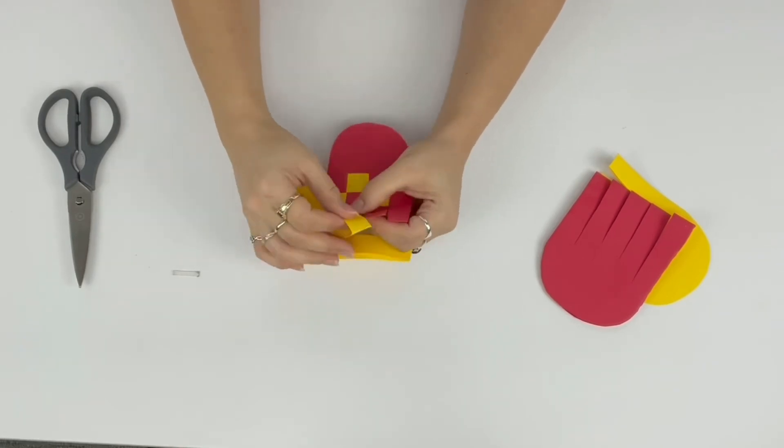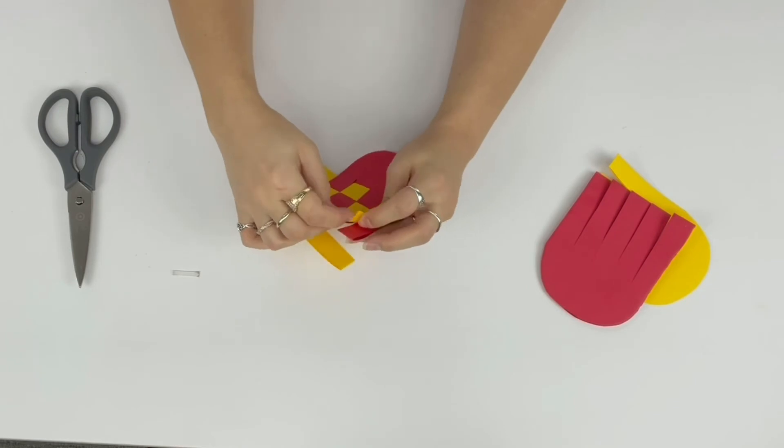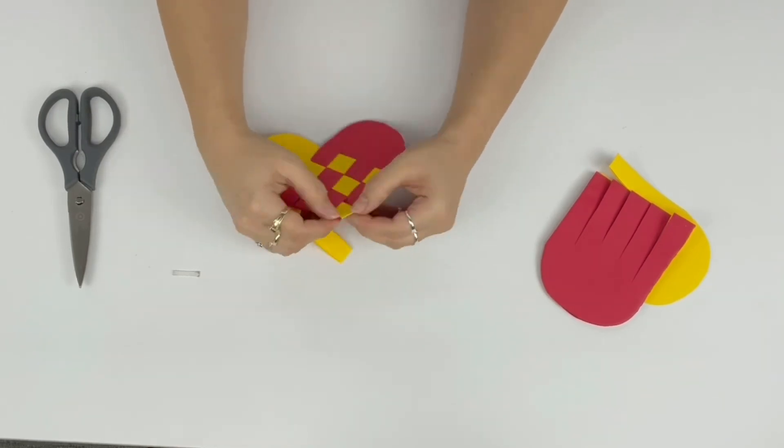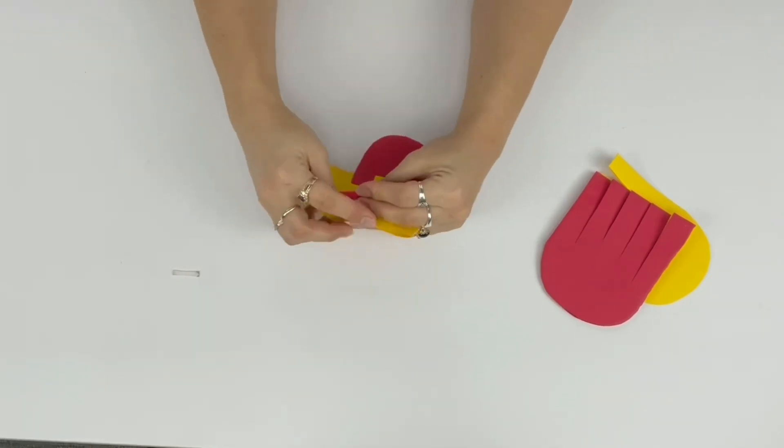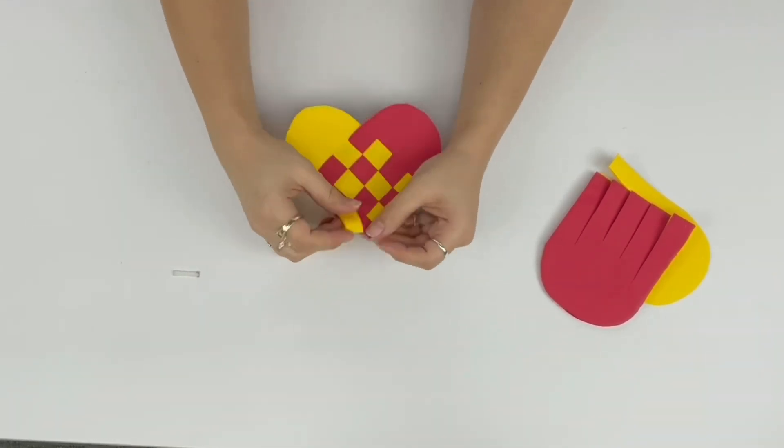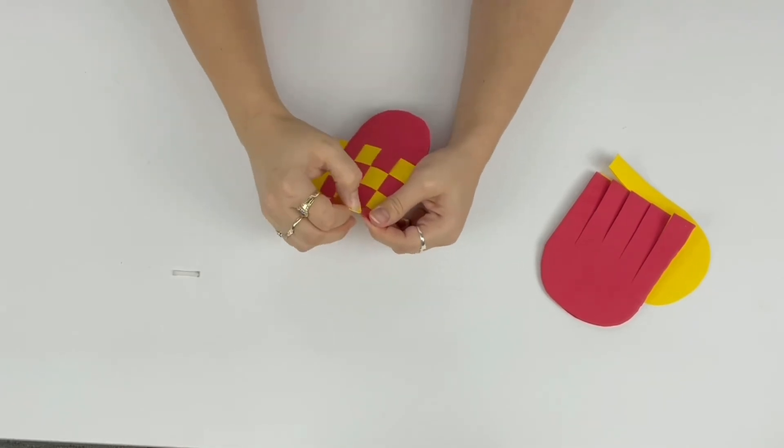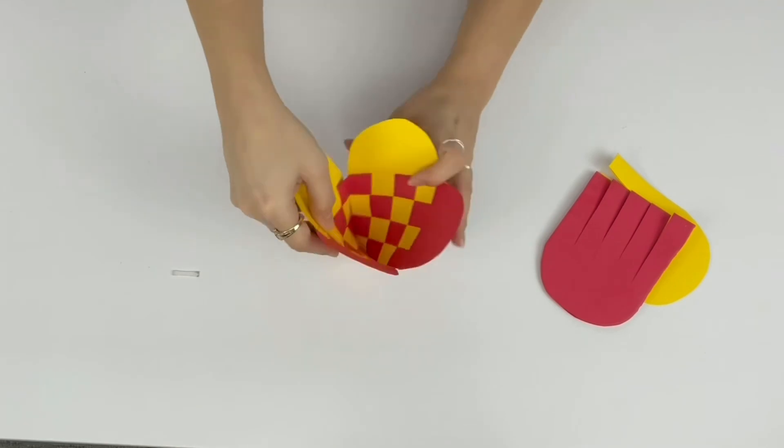So go ahead and weave your paper through, around and then through and then around and then through. The last one I found to be slightly tricky because at that point the paper was pretty tight. You can always trim off a little extra on the end if you need that last piece just to be slightly thinner. But try not to take too much off. Get them all woven through together and there you have it.